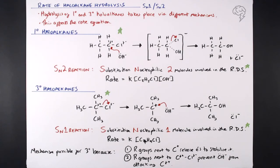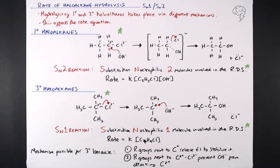Remember both of those reasons for exam purposes — why a tertiary halo alkane undergoes SN1. With a primary halo alkane, the SN1 intermediate (the carbocation) would be too unstable to form. But equally, because that carbon isn't surrounded by R groups, the OH⁻ can get in and directly attack the delta-positive carbon via the SN2 pathway.